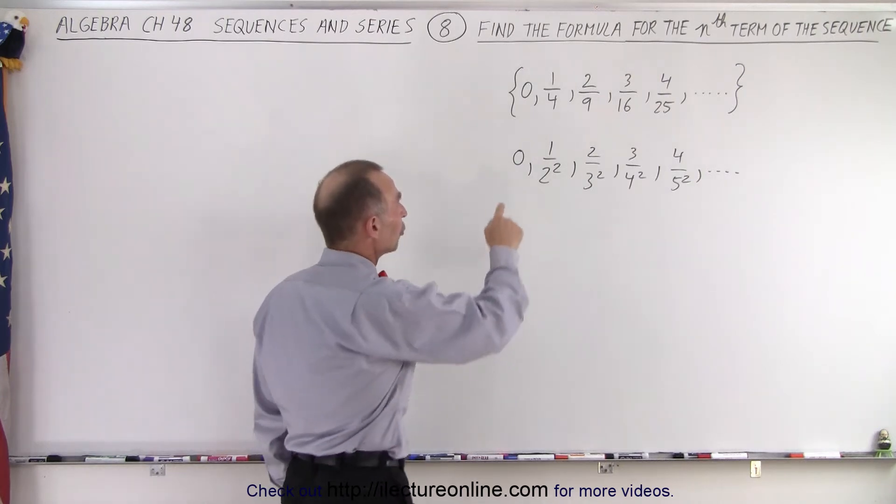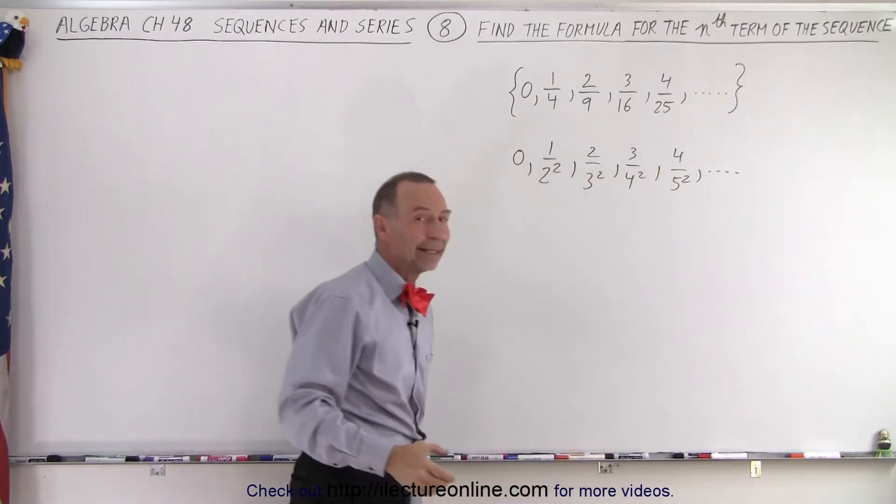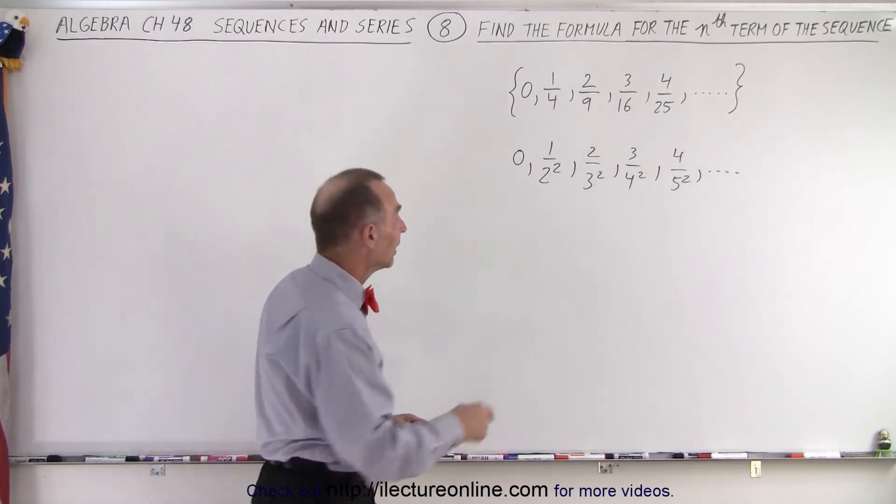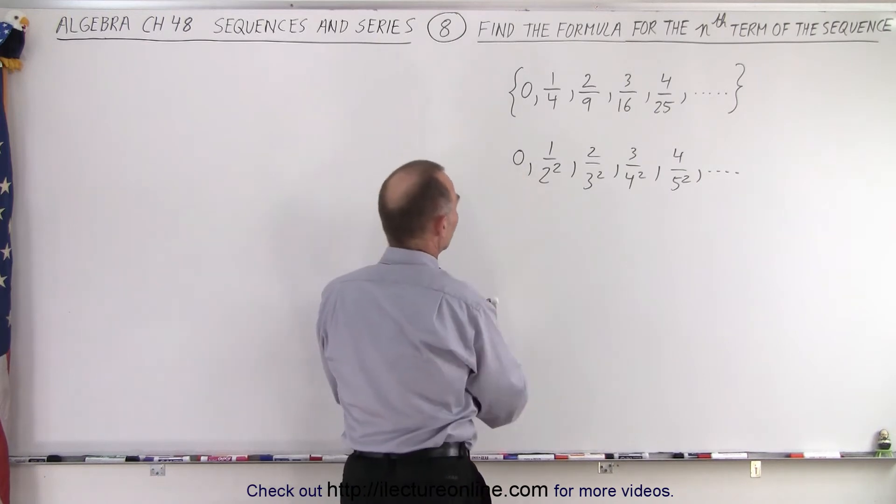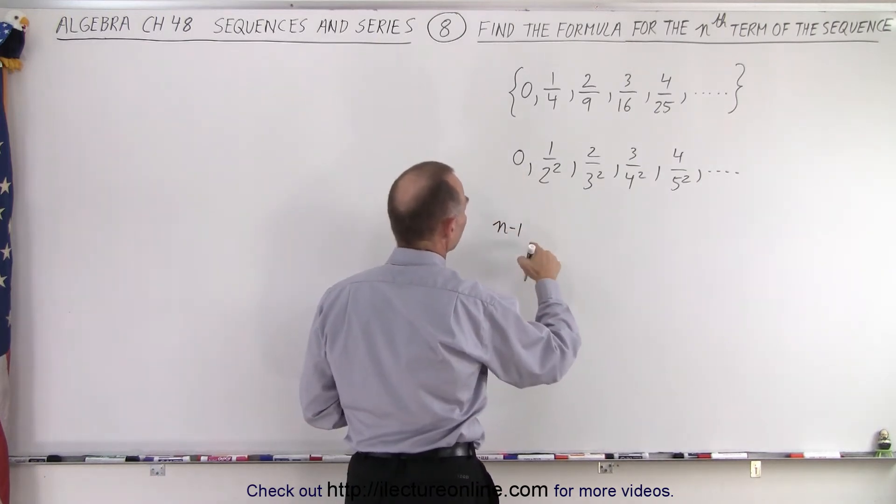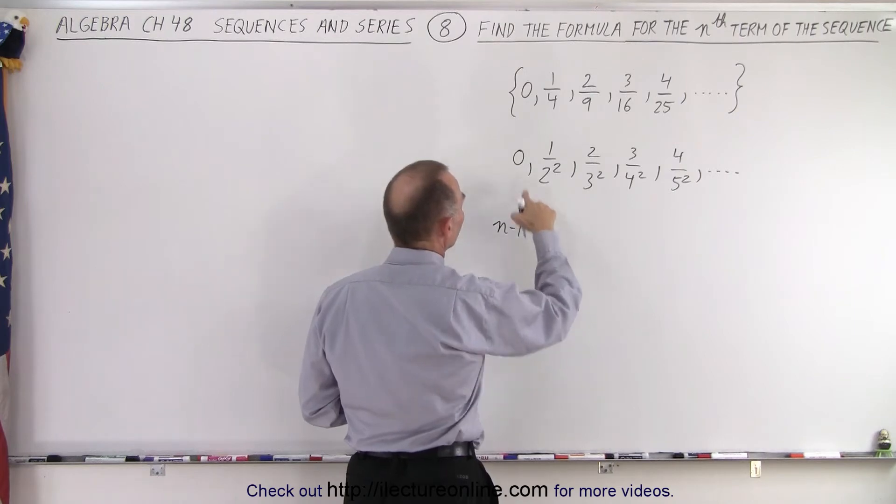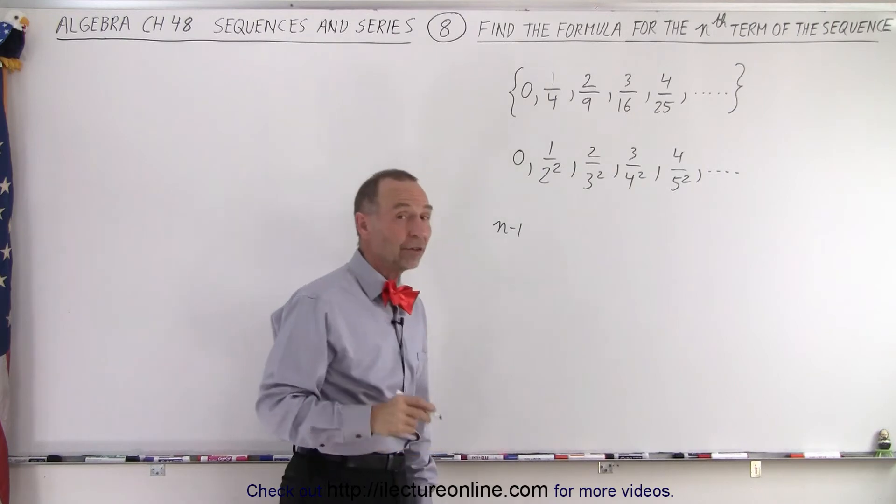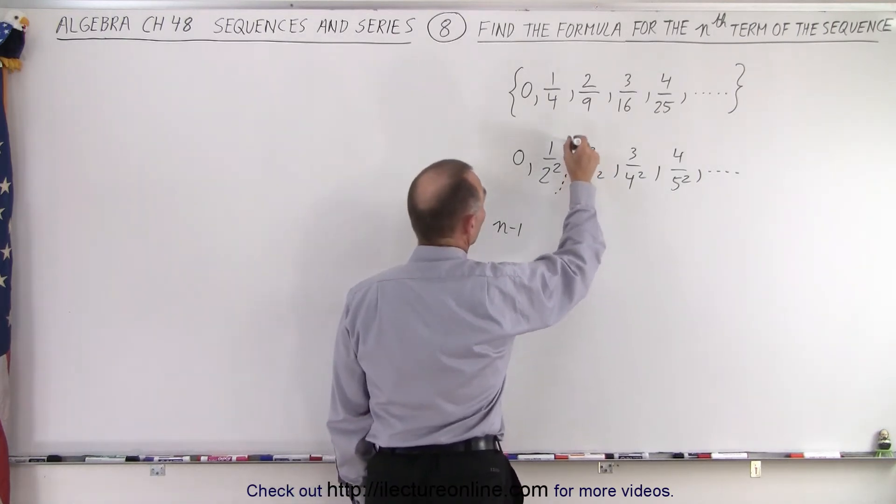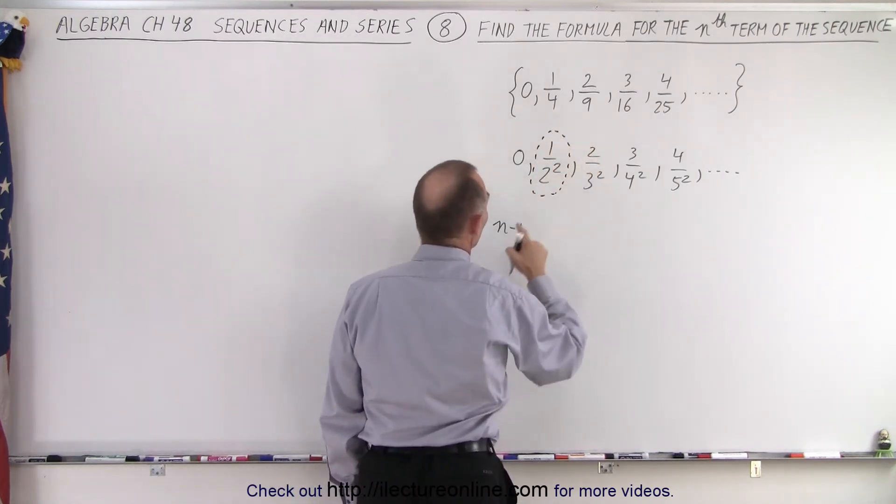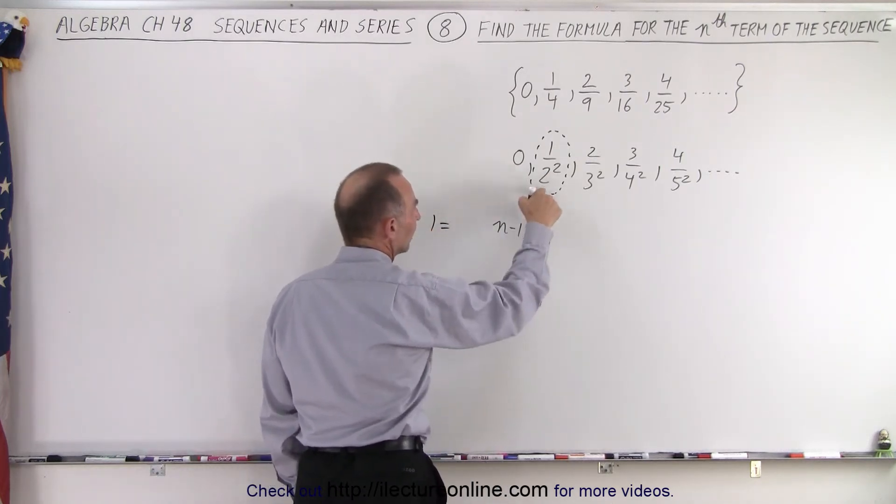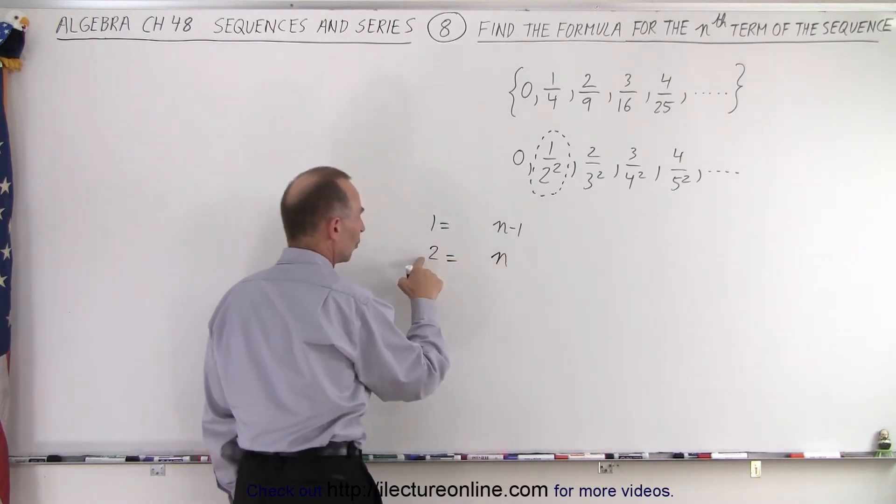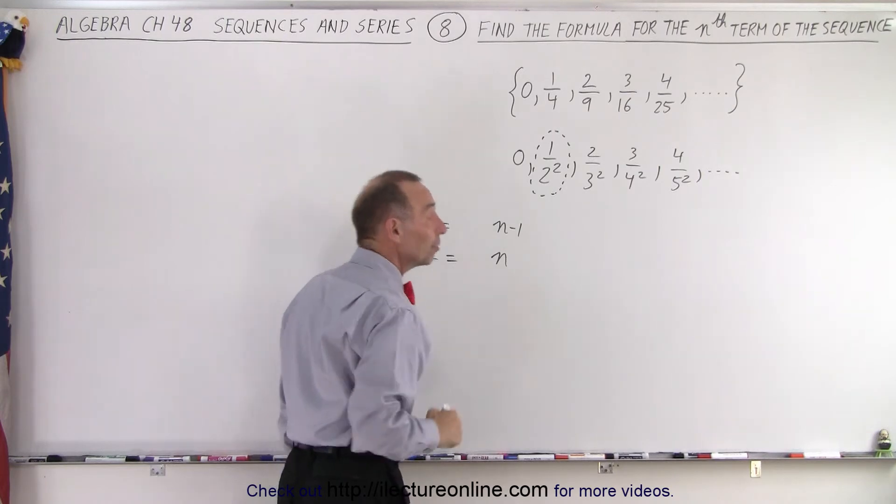So if we're going to let the numerator be represented by the letter N, any random integer, and we want N to start at 1, then this would be N minus 1. So we could say that this would be N minus 1 for the numerator. If 1 equals N minus 1, then how do we represent the denominator? So let's concentrate on this term right here. If 1 is equal to N minus 1, then 2 is equal to N, 1 bigger than N minus 1. Since 2 is 1 more than 1, N is 1 more than N minus 1.